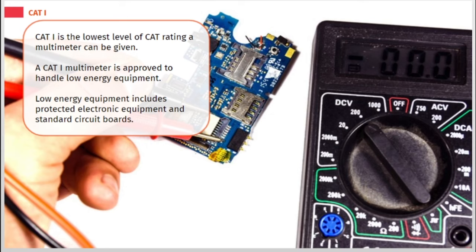CAT 1 is the lowest level of CAT rating a multimeter can be given. A CAT 1 multimeter is approved to handle low energy equipment. Low energy equipment includes protected electronic equipment and standard circuit boards.